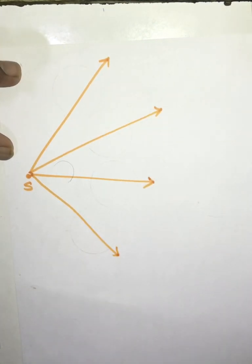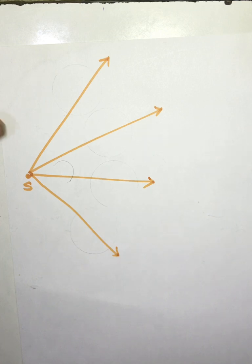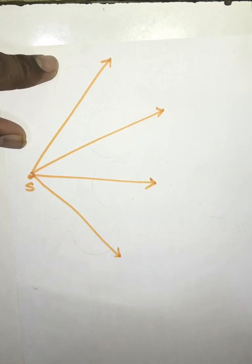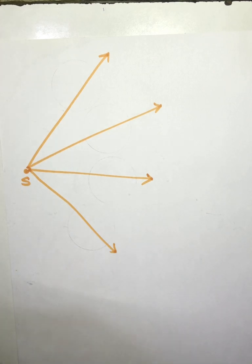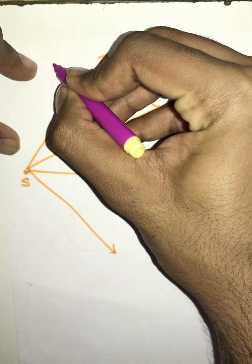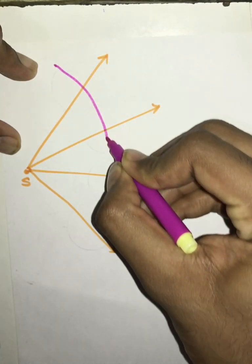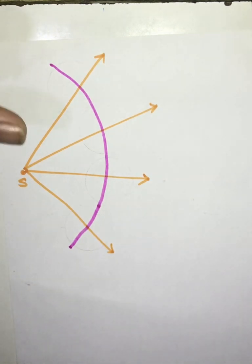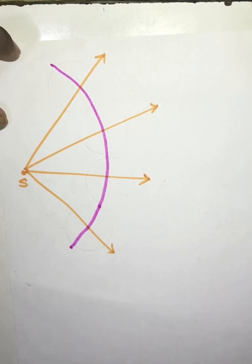Now through this source of emission we get the first wavefront. If you don't know how we get the first wavefront, I will use a link in the description box — please go and watch that video. So in this way we get the first wavefront over here. Now according to Huygens' principle, every point on the wavefront acts as a secondary source of light.